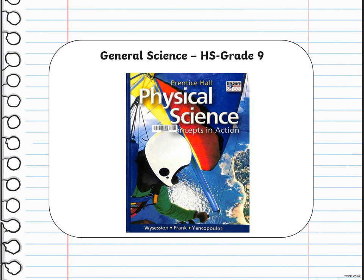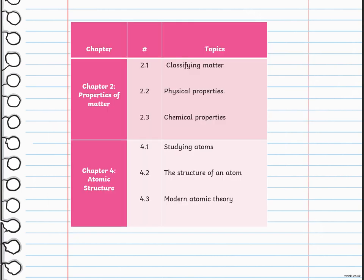During this course, we will be discussing different topics. First of all, we are going to talk about the chemistry part of science — the properties of matter, such as classifying matter, physical properties, and chemical properties. Take into consideration that this topic was covered in grade 6 and grade 8, so we are going to recap and revise all of that.